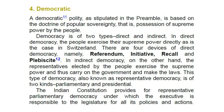4. Democratic: a democratic polity, as stipulated in the preamble, is based on the doctrine of popular sovereignty, that is, possession of supreme power by the people. Democracy is of two types: direct and indirect. In direct democracy, the people exercise their supreme power directly, as is the case in Switzerland. There are four devices of direct democracy: referendum, initiative, recall, and plebiscite. In indirect democracy, the representatives elected by the people exercise the supreme power and thus carry on the government and make the laws.